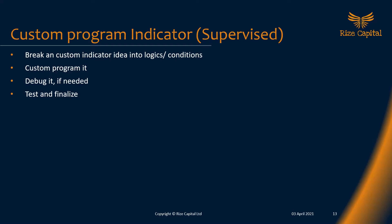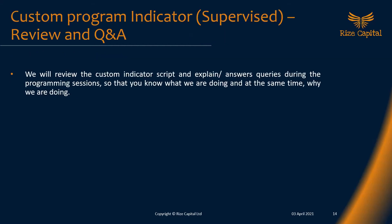In the advanced level, we will break a custom indicator idea into logics and conditions. We will spend significant time on this first objective because getting it right is very important — if we get it wrong, our entire program will be wrong. Instead of a separate Q&A session, we will review the custom indicator script during the coding period itself.